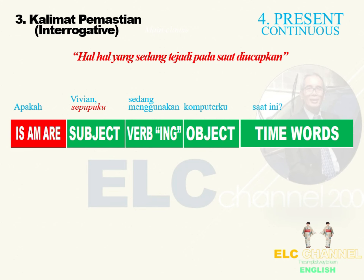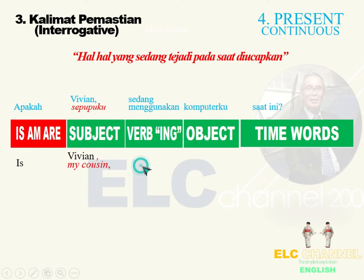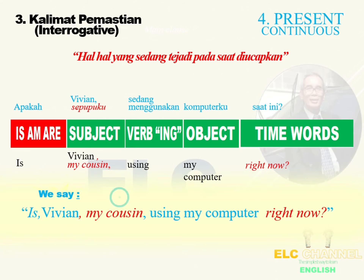Lanjut pada kalimat pemastian atau interrogatif. Apakah Vivian, sepupuku, sedang menggunakan komputerku saat ini? Tinggal membalik, kita gunakan to be is karena Vivian sendirian. Bahasa Inggrisnya: Is Vivian, my cousin, using my computer right now?